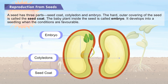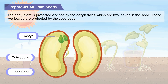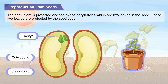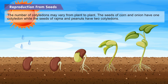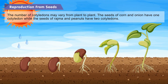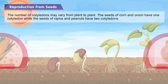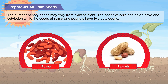The hard outer covering of the seed is called the seed coat. The baby plant inside the seed is called the embryo. It develops into a seedling when conditions are favorable. The baby plant is protected and fed by the cotyledons, which are two leaves in the seed, protected by the seed coat. The number of cotyledons may vary from plant to plant. The seeds of corn and onion have one cotyledon, while the seeds of rajma and peanuts have two cotyledons.